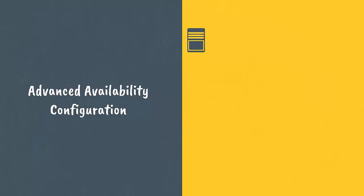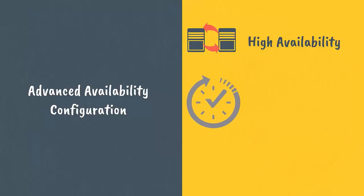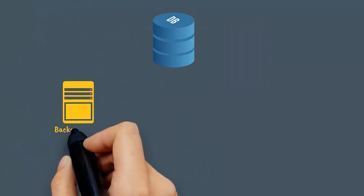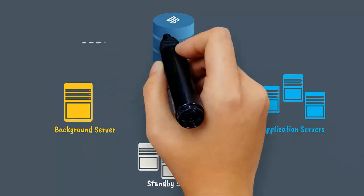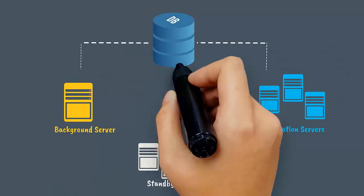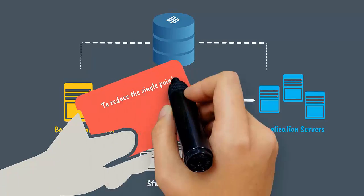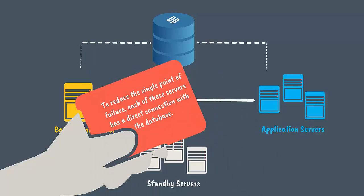The Advanced Availability configuration provides higher availability, reduces downtime, and supports rolling maintenance. It includes a background server, one or more standby servers, and one or more application servers. To reduce the single point of failure, each of these servers has a direct connection with the database.